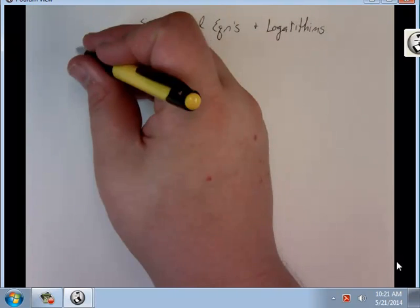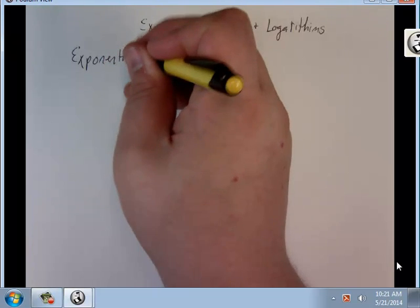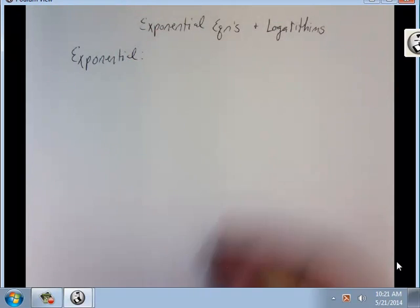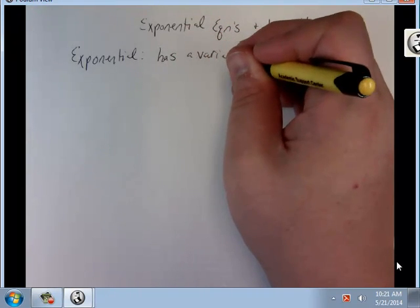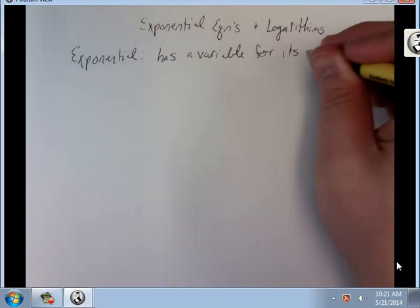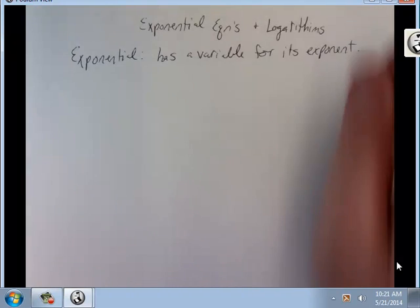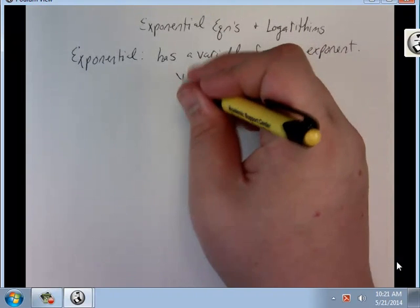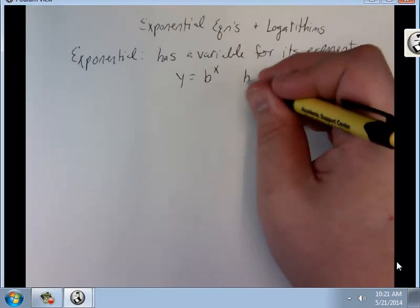An exponential equation has a variable for its exponent. y equals b to the x, and b is known as the base.